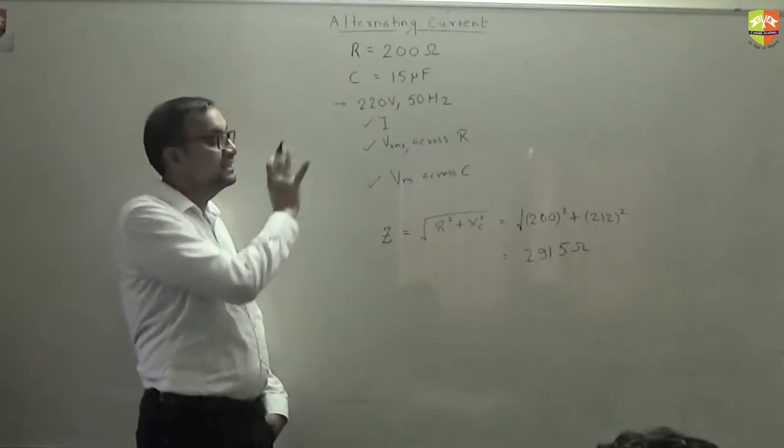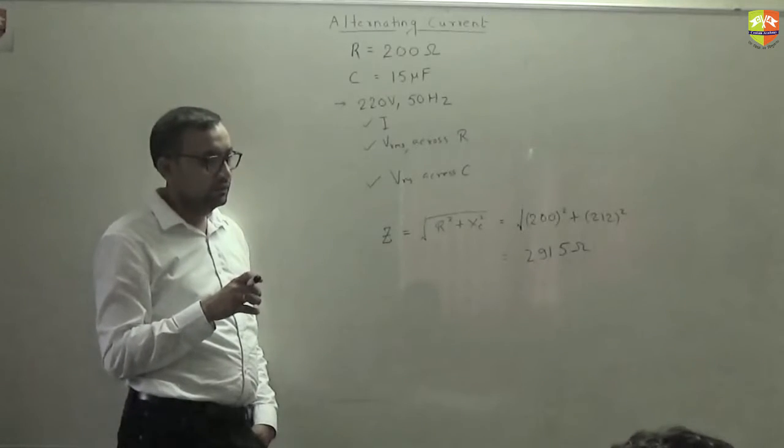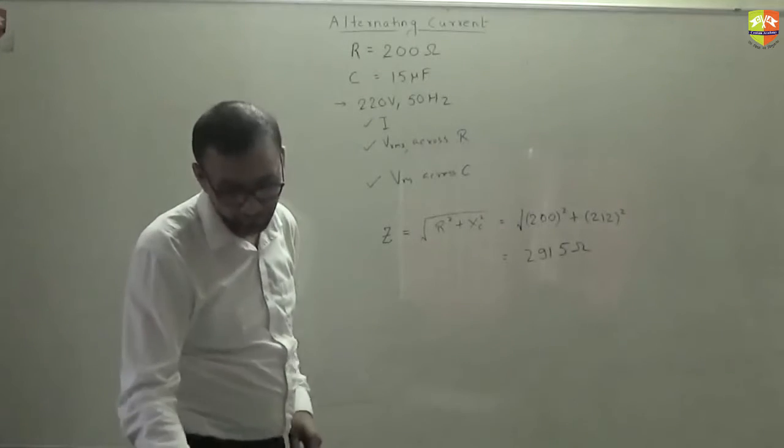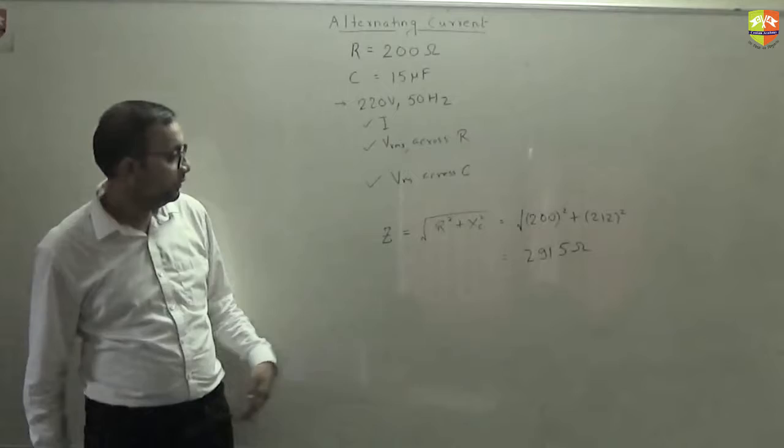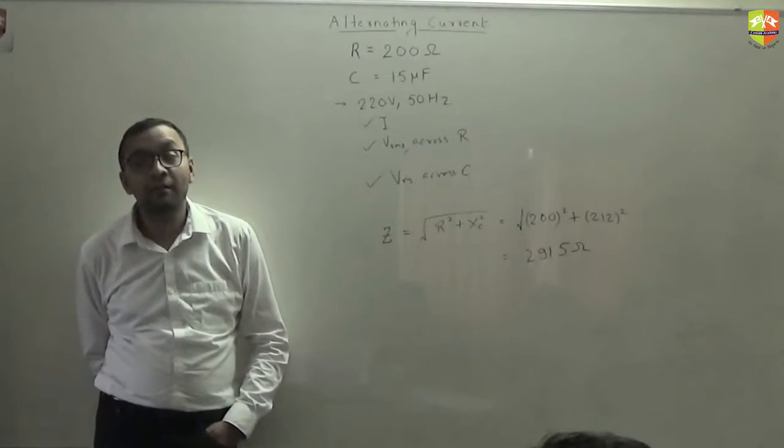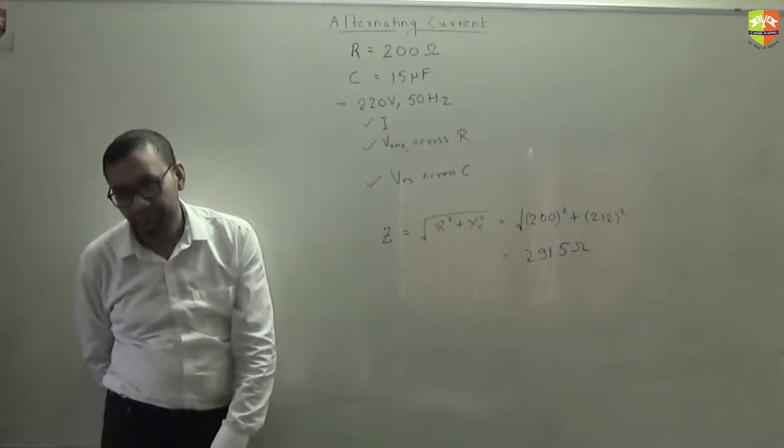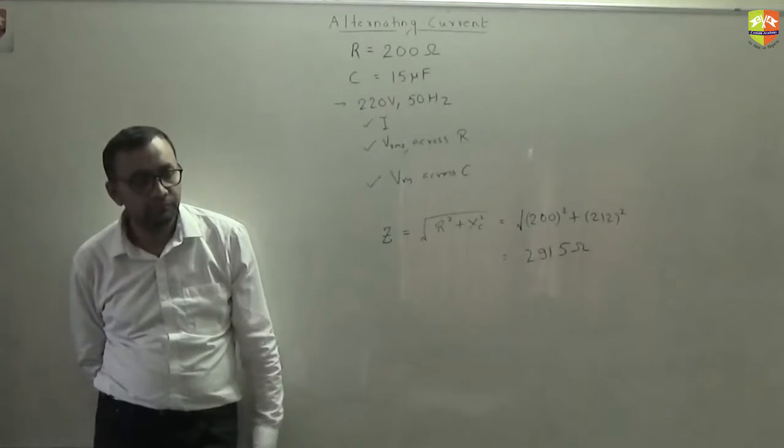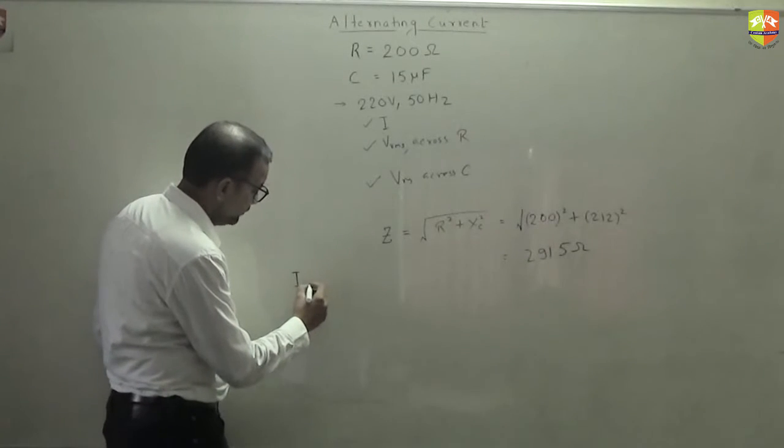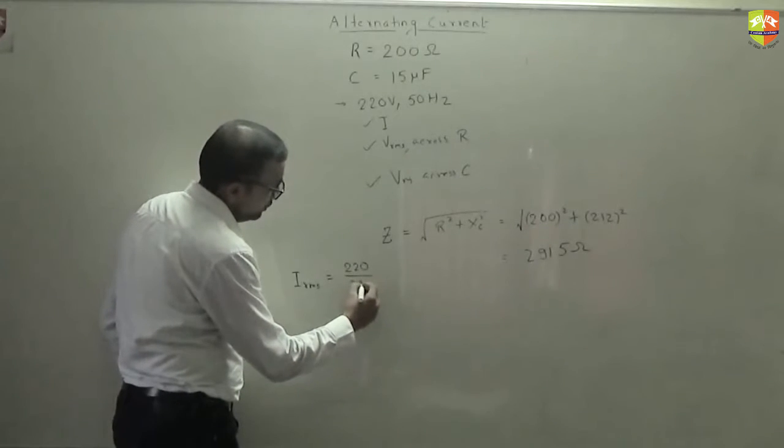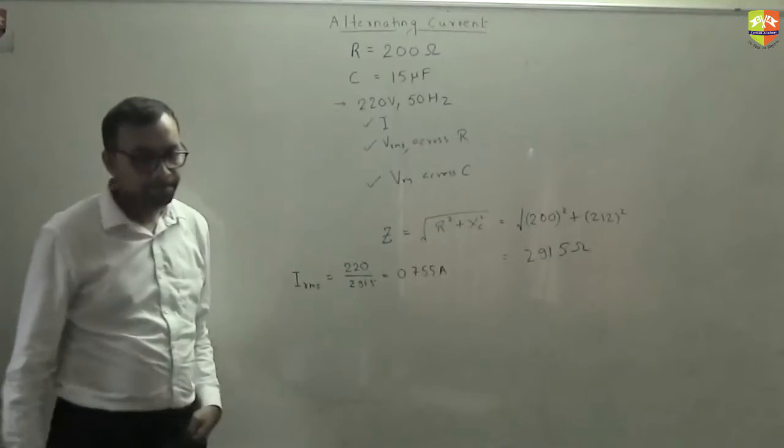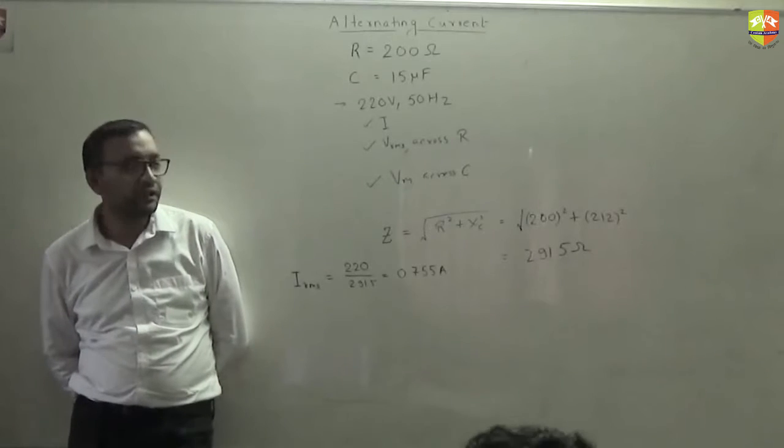That is the rms voltage. No, no, no. Total V is that. It's not V across R. I is equal to V by Z. For current you need to find V_R. For current at least. Sir, is I equal to 1.04? No. How can it be? You are getting impedance less than... 291 is less than 220? 220 divided by 291 is 0.754. You got the maximum current? No, no. When I say just find out the current, I mean rms current. What if you get I_RMS value, right? I want rms only. I_RMS is 220 divided by 291.5. This is 0.7 or something.